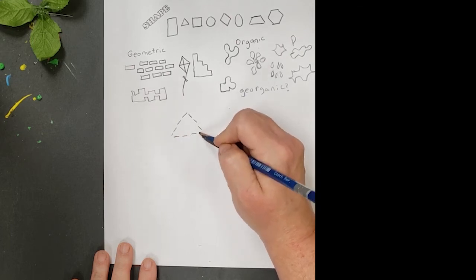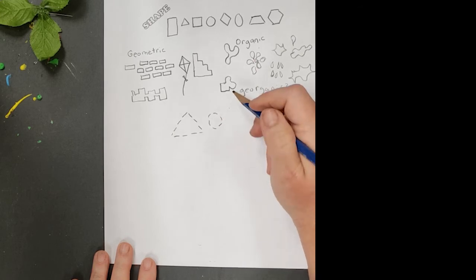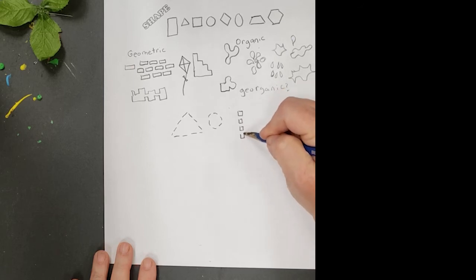Now, in math class, you probably had a teacher that told you if it had any space in between the lines, it was not a shape, and that's true for math, but in art, we often have used the lines that have the dashes, so we could also do that with shapes.